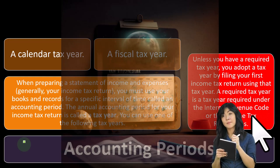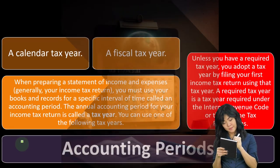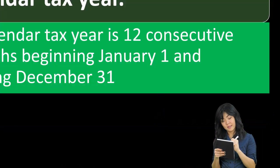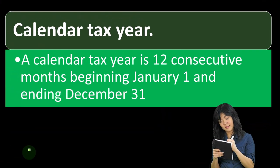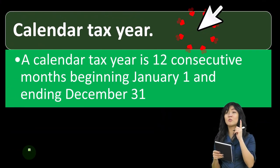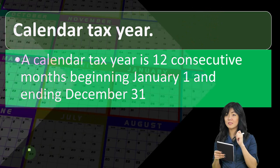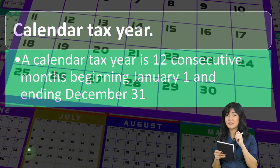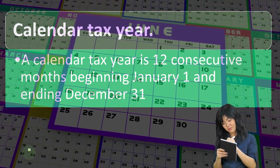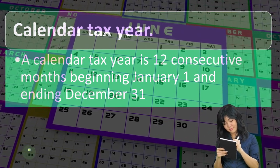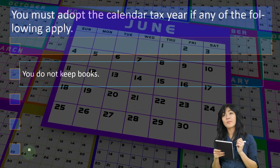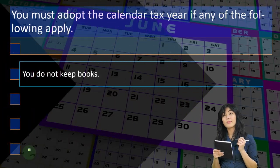A required tax year is a tax year required under the Internal Revenue Code or the Income Tax Regulations. A calendar tax year is 12 consecutive months beginning January 1st and ending December 31st — straightforward, just like it is on a calendar.